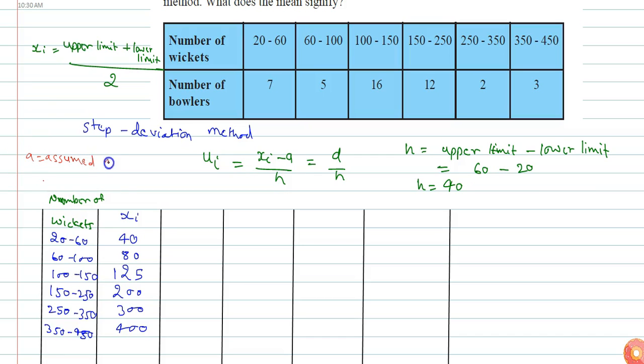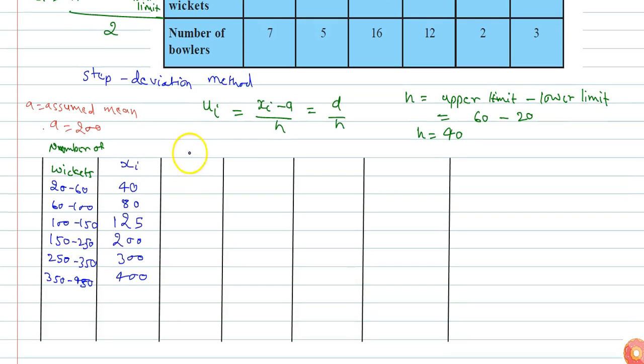The assumed mean is chosen from the values of xi. So here I am choosing a equals 200.